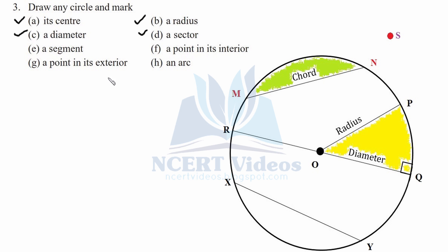E part: a segment. The shaded region colored in green is your segment, because it is made with the help of a chord. F part: a point in its interior — O is the center and it is a point in the interior.